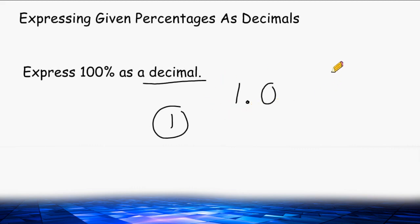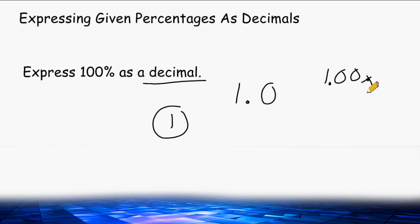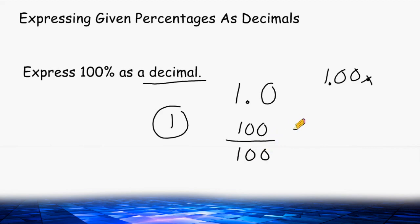You can still follow the rule of putting a decimal at the end and moving it two spaces to the left, and you would still come up with one whole — 1.00 is the same thing as 1. We also know that 100 out of 100 as a fraction equals one whole.